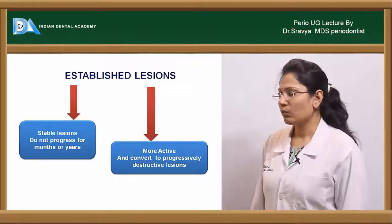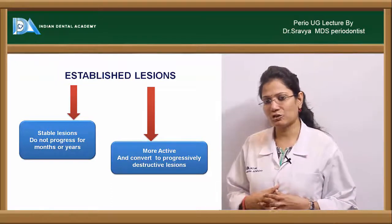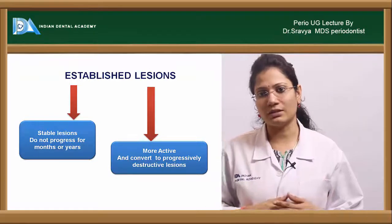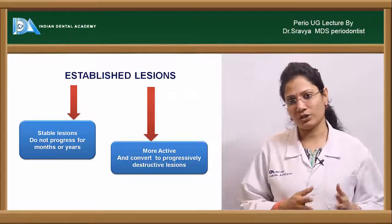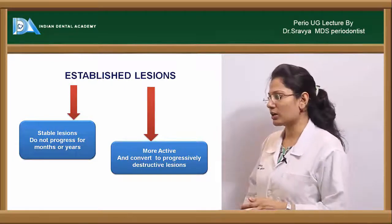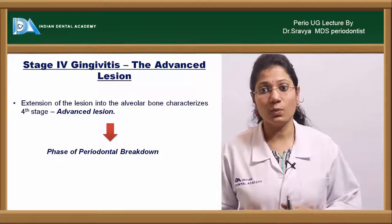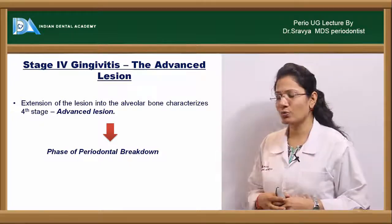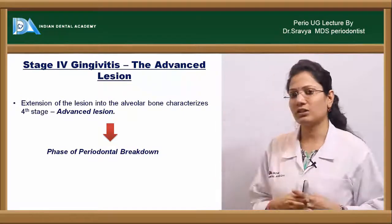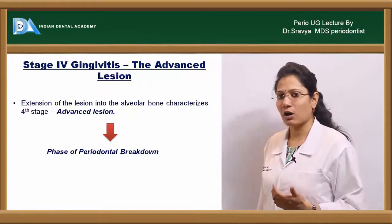If you are able to control plaque accumulation at the established lesion stage and stabilize gingival status, it will stop at gingivitis. If not, it will progress to the advanced lesion — Stage 4 — wherein there is extension of the lesion into the alveolar bone, characterizing the fourth stage and leading to phases of periodontal breakdown.